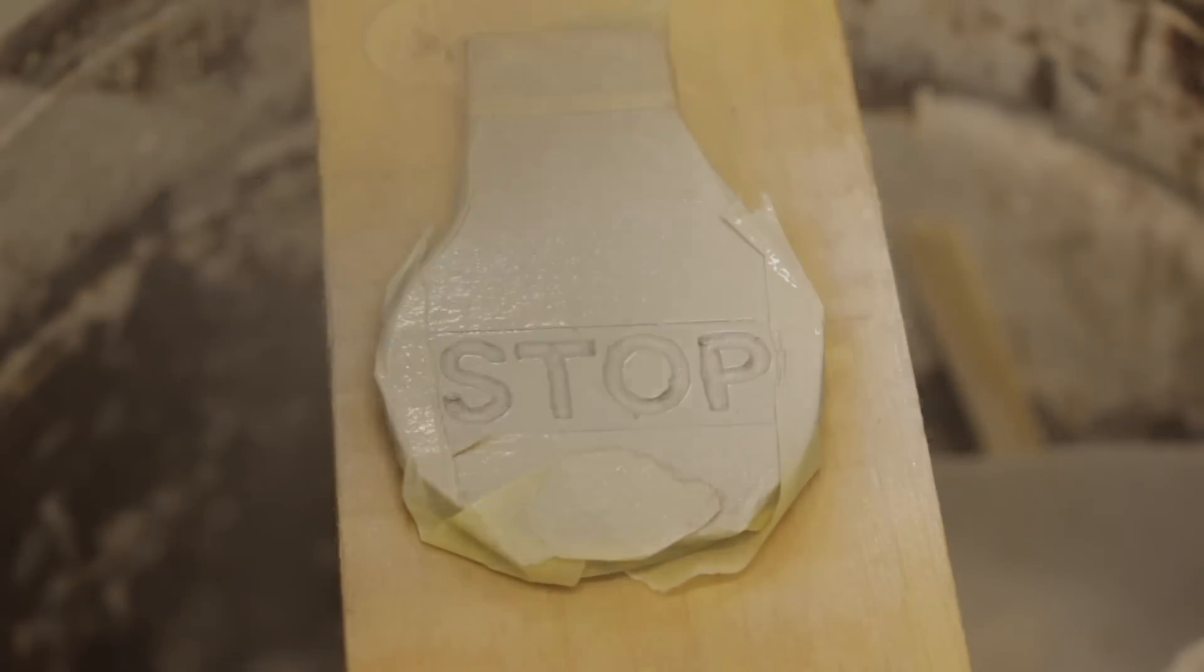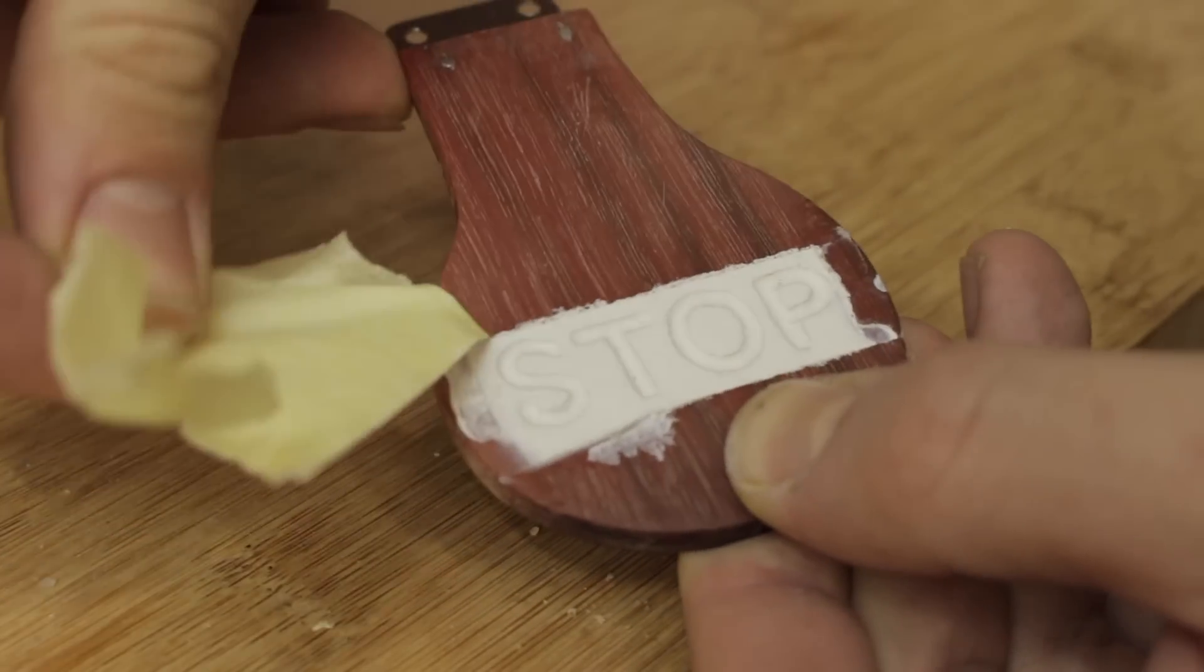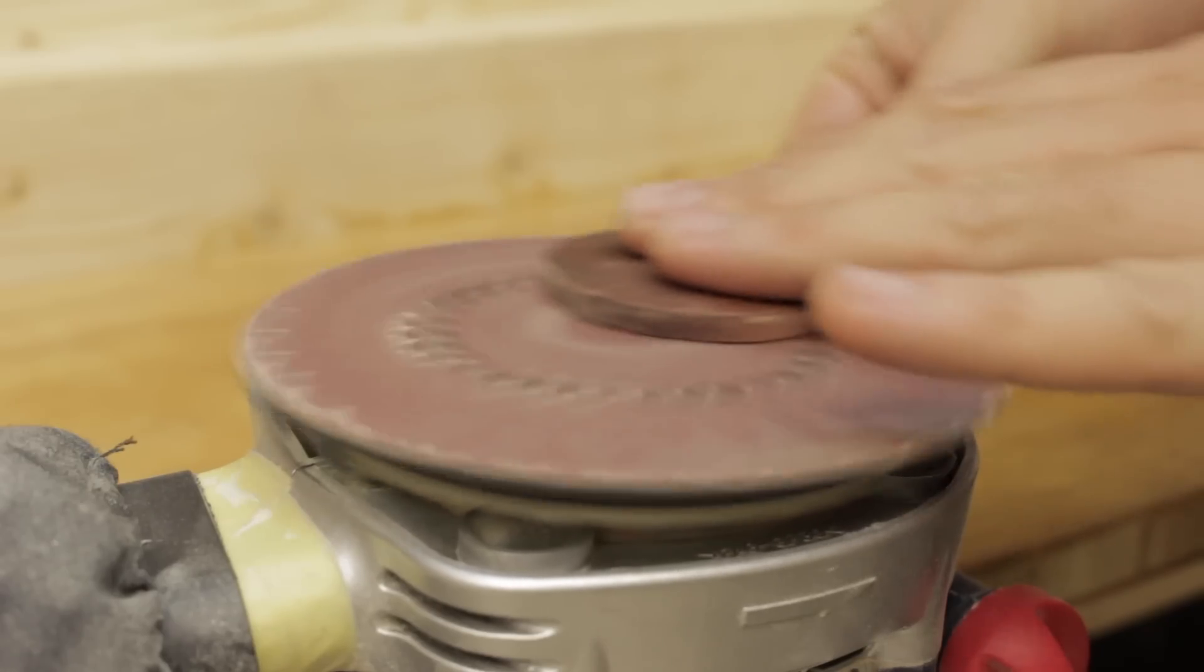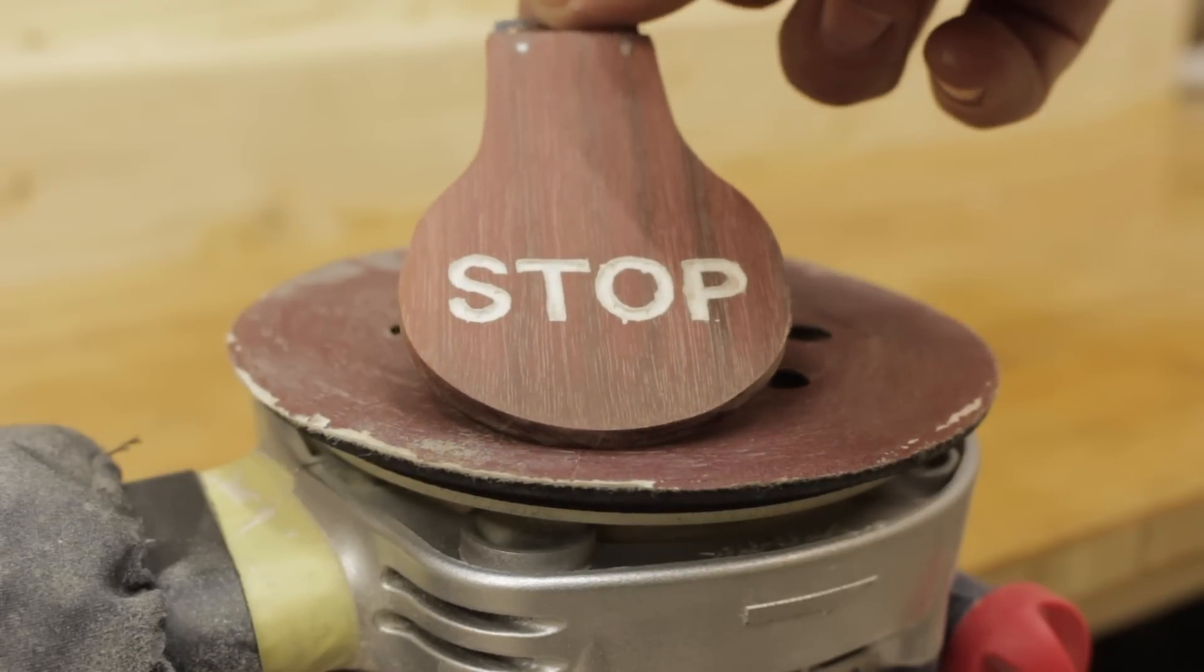I put some masking tape to protect the sign, then sprayed it white on the sander. I took off the excess of paint which left me with this design.